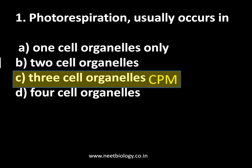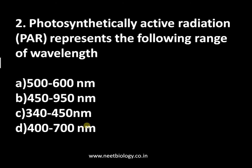It's easy to remember as CPM — chloroplast, peroxisome, and mitochondria are involved in photorespiration. It's also called the C2 cycle, and it's a wastage of energy with input of ATP and without production of ATP. That's why C4 and CAM plants have evolved to minimize or prevent the photorespiration pathway.